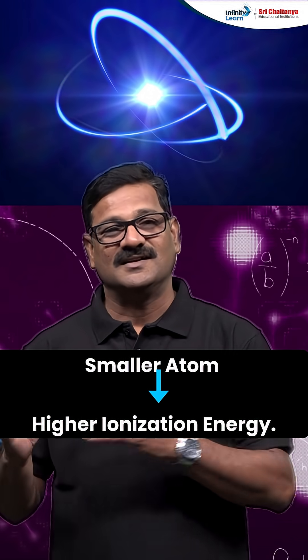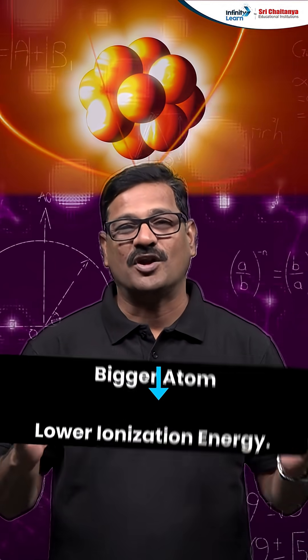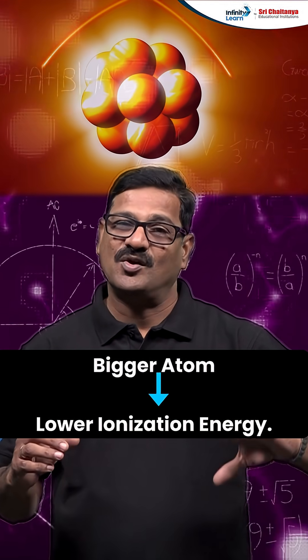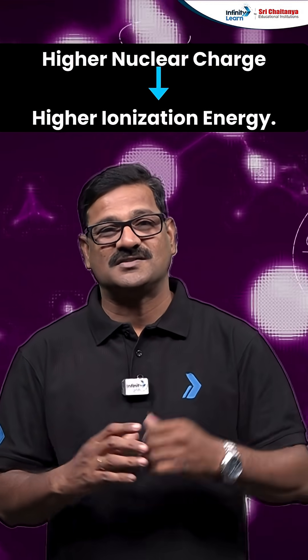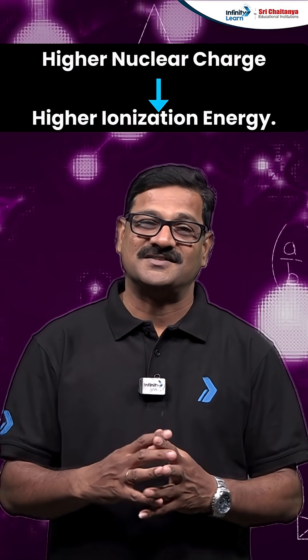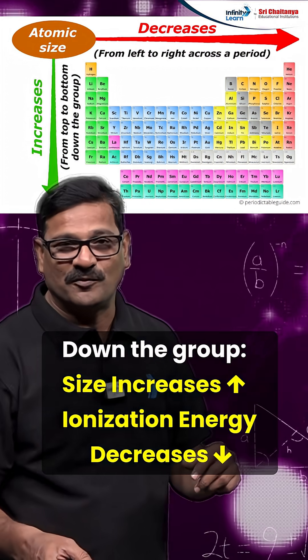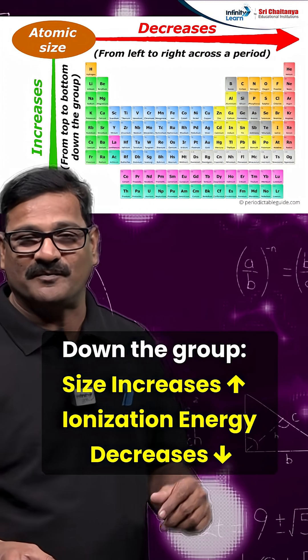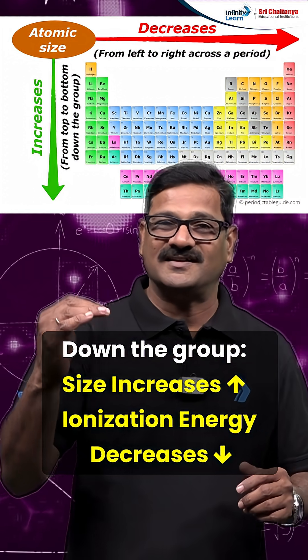Ionization energy is based on various factors: smaller size means high ionization energy, larger size means low ionization energy. As effective nuclear charge increases, ionization energy increases. In the periodic trend, down the group from top to bottom, the size of the atom increases and ionization energy decreases.